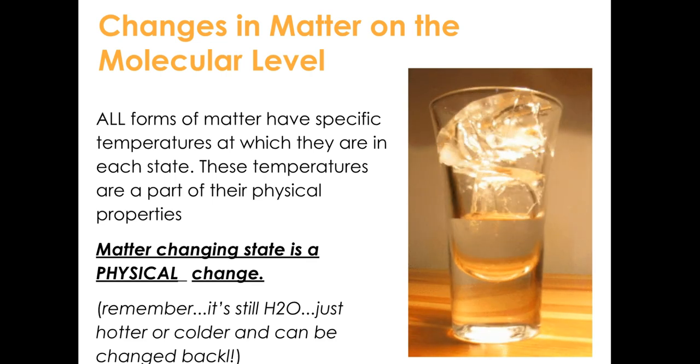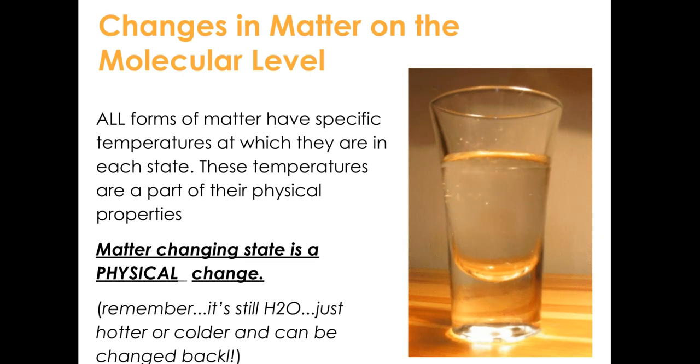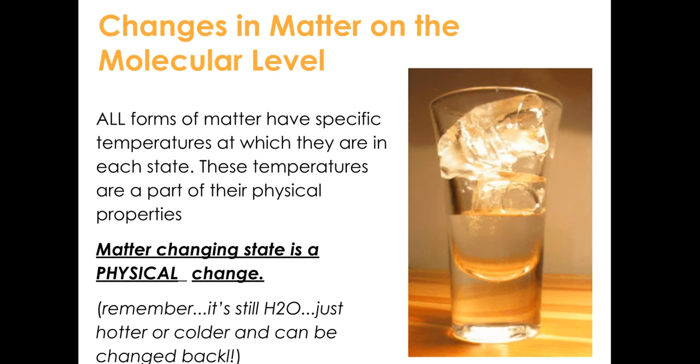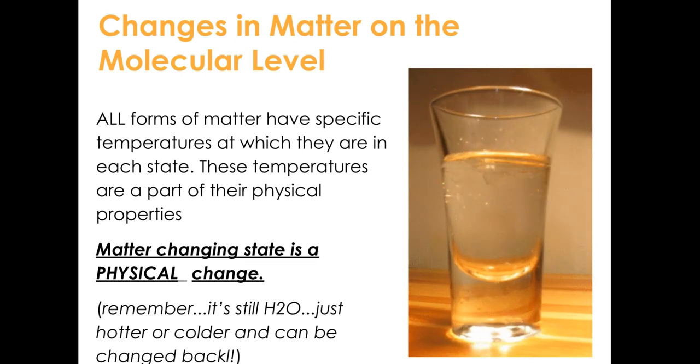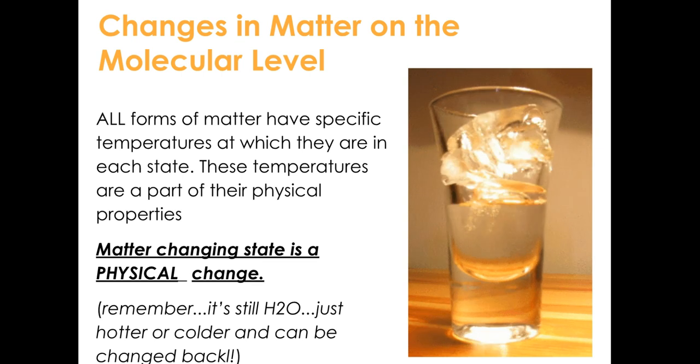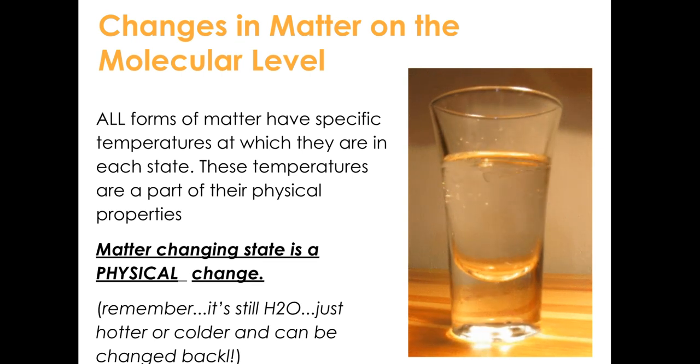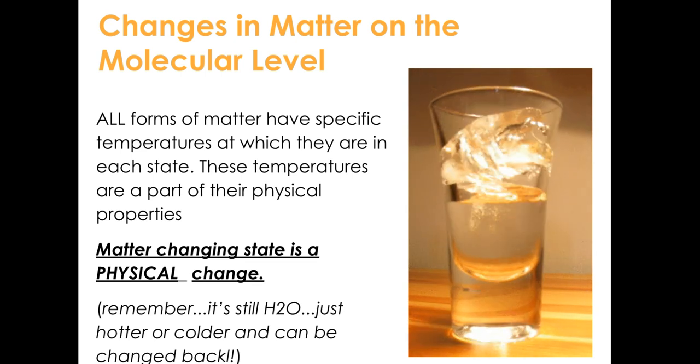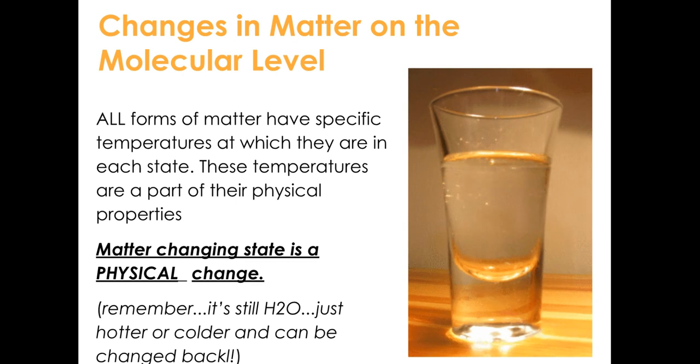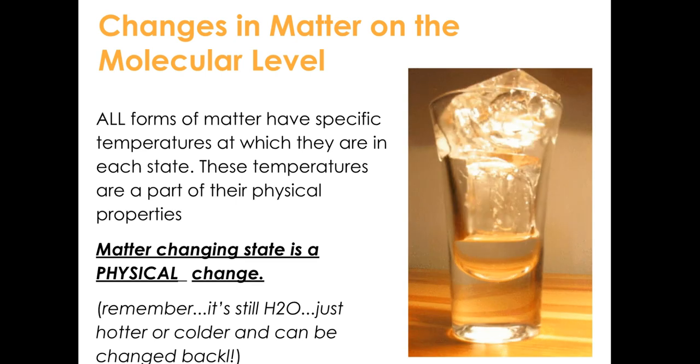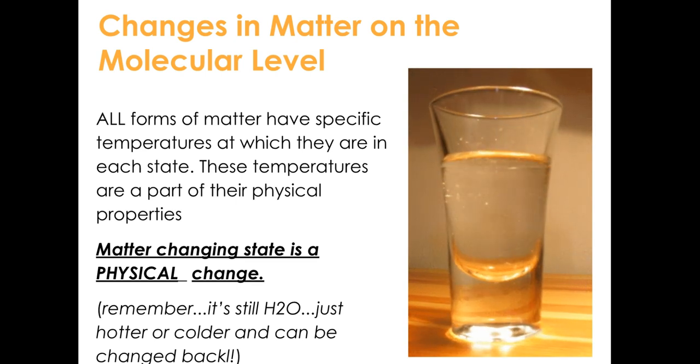All forms of matter have specific temperatures at which they are in each state, kind of like we saw in the chart just in the video clip. These temperatures are part of their physical properties. This is really important to remember that matter changing state is a physical change. We are not combining different products to make a new substance. If we melt ice into water, it's still water, it's just hotter or colder water, and you can change it right back again. You can put the glass of water in the freezer and it will turn back into a solid. Matter changing state is a physical change. This is very important to remember.